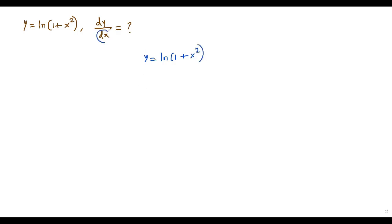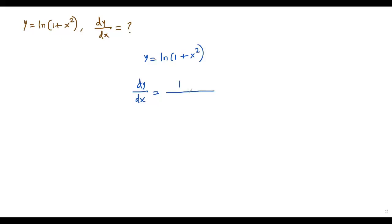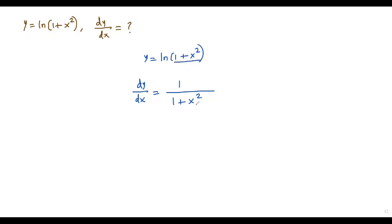According to the question, we have to find the derivative with respect to x. On the left side we have y, so finding the derivative of y with respect to x gives us dy over dx. Whenever we find the derivative of a natural logarithm, we write 1 in the numerator and whatever is in the argument of the natural logarithm in the denominator — that is, 1 over (1 plus x squared).